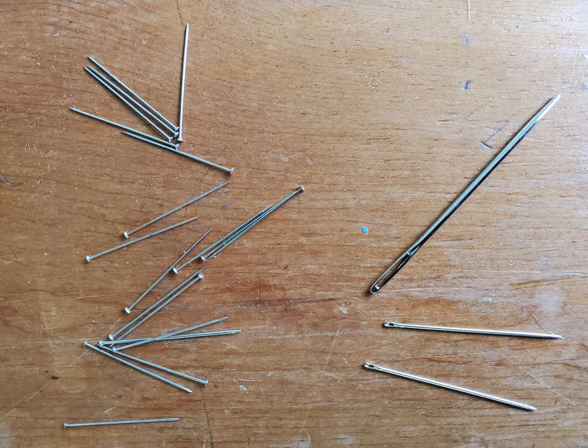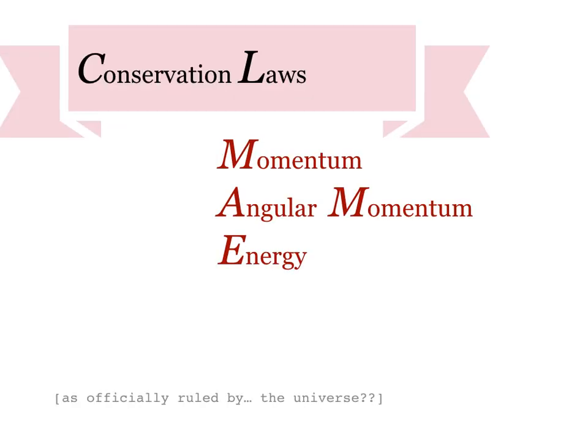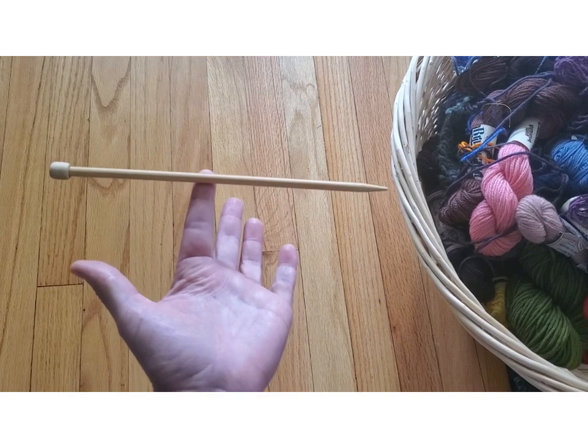There's another important level of describing the properties of particles: at the level of a system. Like in this system of sewing supplies, I have 19 pins and three needles. For particles, the system-level properties might be the total number of particles of each type, the total momentum, total angular momentum, or the total energy — which leads us to conservation laws. It seems to be that the universe has some rules — those rules govern system-level properties. For example, if we have a bounded system of particles, the total amount of momentum, angular momentum, and energy in that system doesn't ever seem to be able to change. So if one particle loses energy, this has to be balanced out by another particle gaining energy.